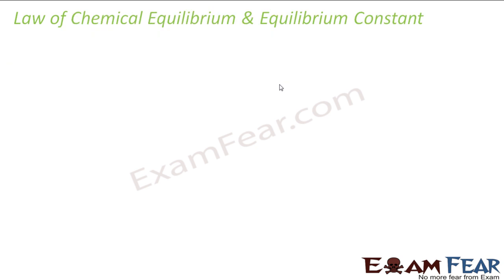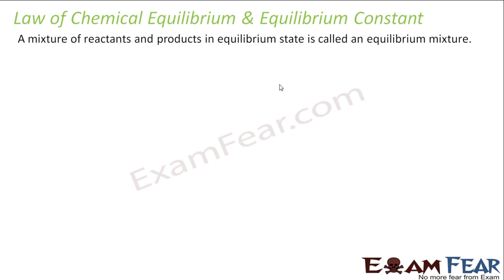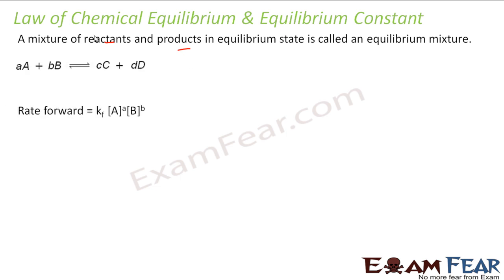We will now use the Law of Mass Action to find the Law of Chemical Equilibrium. An equilibrium mixture is a mixture where the reactants and products are in equilibrium, and the rate of the forward reaction equals the rate of the backward reaction. Consider the equilibrium reaction: a moles of A plus b moles of B gives c moles of C and d moles of D.